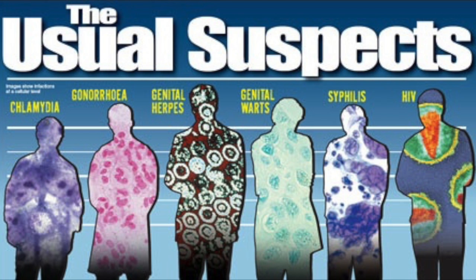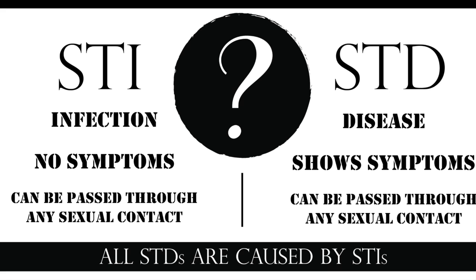The first is an STD, which is a group of viral, bacterial, and other infections that are spread primarily by sexual behaviors. STDs are another term for STIs. STIs are the infection itself — they don't have symptoms, but they can be passed through any sexual contact. An STD does show the symptoms and can also be passed through any sexual contact. Essentially all STDs are caused by STIs.